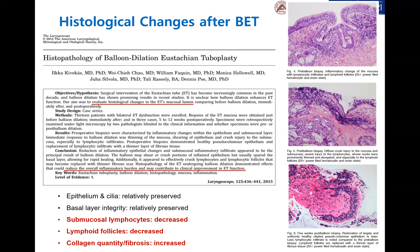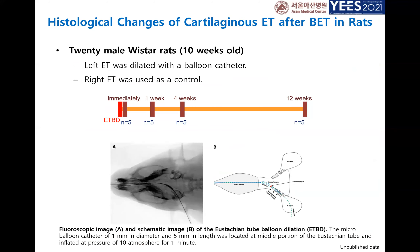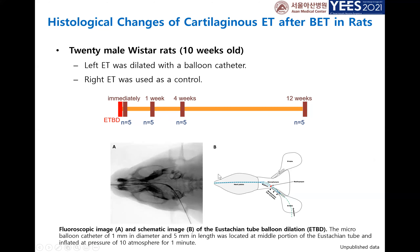We wanted to see what happens after balloon dilation in the cartilaginous portion. We used rats and balloon-dilated the left side of the eustachian tube, using the right side as a control. These are the histological changes: on the nasopharyngeal side mucosa, before dilation you can see many goblet cells — shown in both low and high power views.